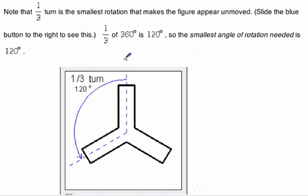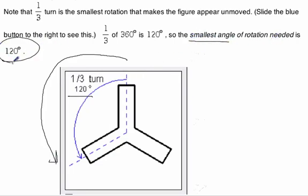So if you notice, we have to rotate this around. If we rotate it a third turn, or 120 degrees, then it looks the same. So that smallest angle of rotation needed is 120. We'll need to put that in our answer.